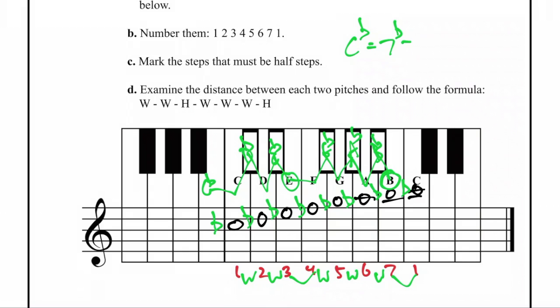What are they? The order of the flats, which is B-E-A-D-G-C-F: B-flat, E-flat, A-flat, D-flat, G-flat, C-flat, and F-flat.